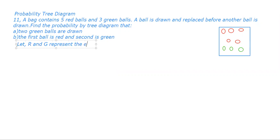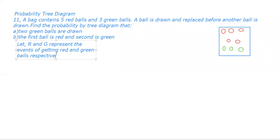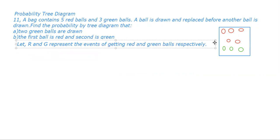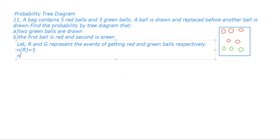Let R and G represent the events of getting red and green balls respectively. The number of red balls is given as five, the number of green balls is given as three, so the total number of balls is eight.